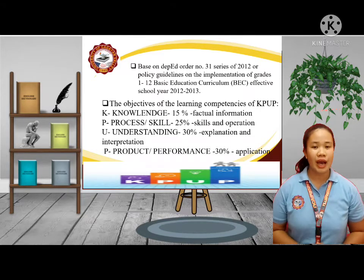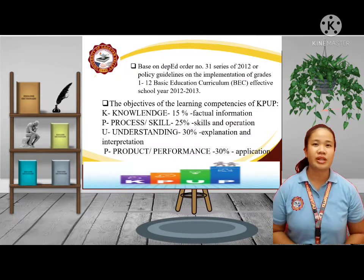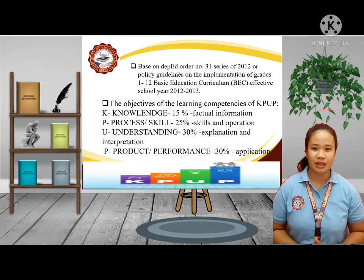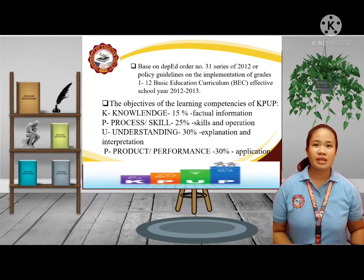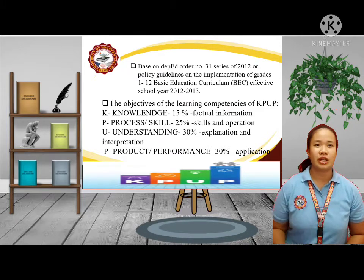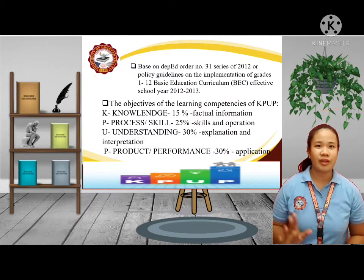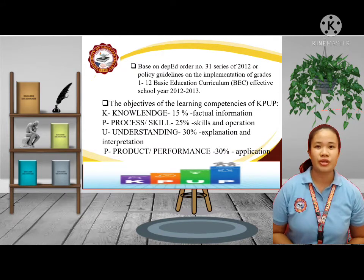The learning outcomes, defined by the four levels of assessment, are reflected in the teacher's class record and shall be given corresponding percentage weights. Since knowledge is the most basic of the desired learning outcomes, it is given the lowest percentage weight, while the rest, which reflect deeper learning, are given more weight.